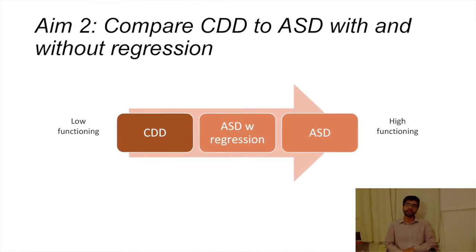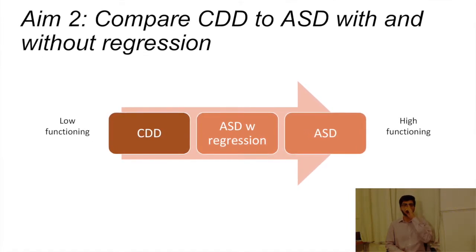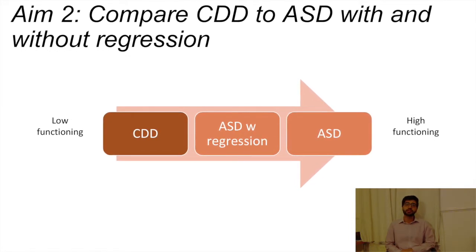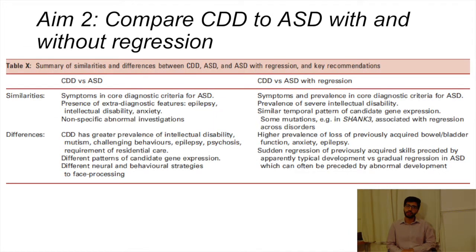We confirmed similarities between ASD, ASD with regression, and CDD, especially in core diagnostic symptoms. With regards to severity, a gradient emerged where CDD was the lowest functioning while ASD without regression was the highest. While all participants with CDD achieved age-appropriate developmental milestones before symptom onset, only 10–14% of ASD participants did. Importantly, differences between CDD and ASD were found in the types of developmental domains affected and in the flavour of symptoms — for example, CDD showed a higher prevalence of mental health symptoms, and symptom onset was sudden in 40% of those with CDD versus only 10% of those with autism.